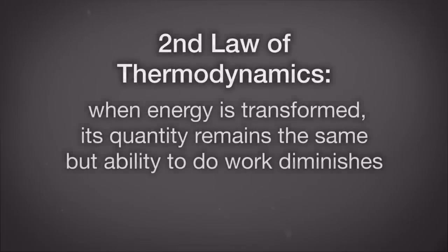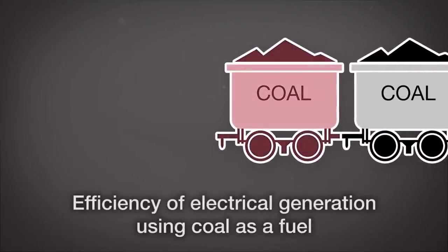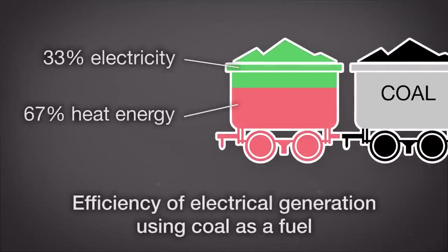The second law of thermodynamics says that when energy is transformed from one form to another, the quantity of energy remains the same but its ability to do work diminishes. For example, when generating electricity from coal, however much energy was contained in the coal, you'll only get a fraction of that as electricity — never 100%. In fact, with electricity generation it's often on the order of about one-third: 33 to 35% of the energy in the coal actually gets converted to electricity.